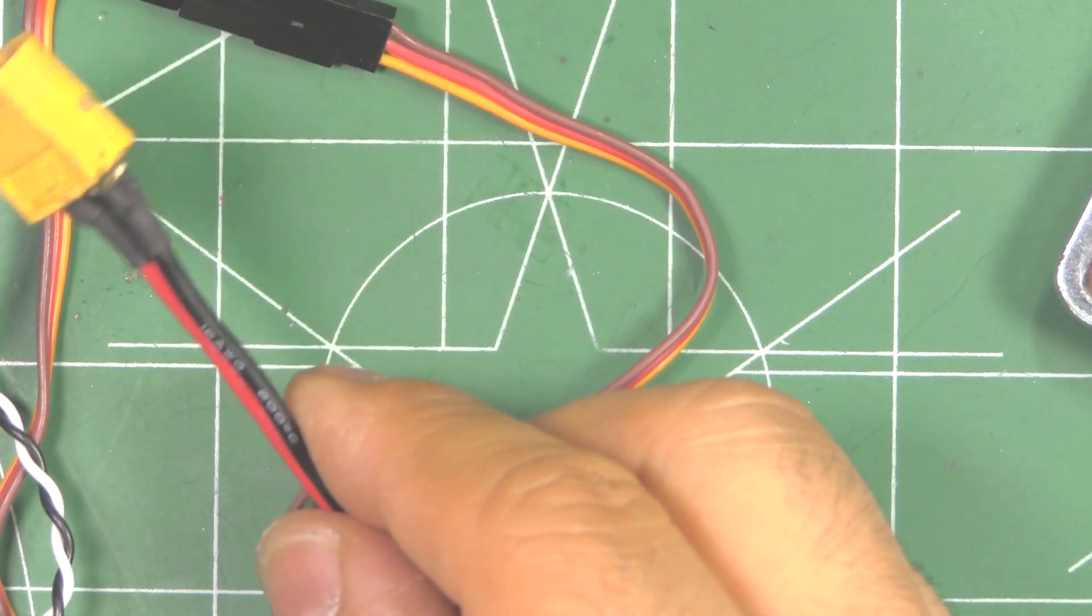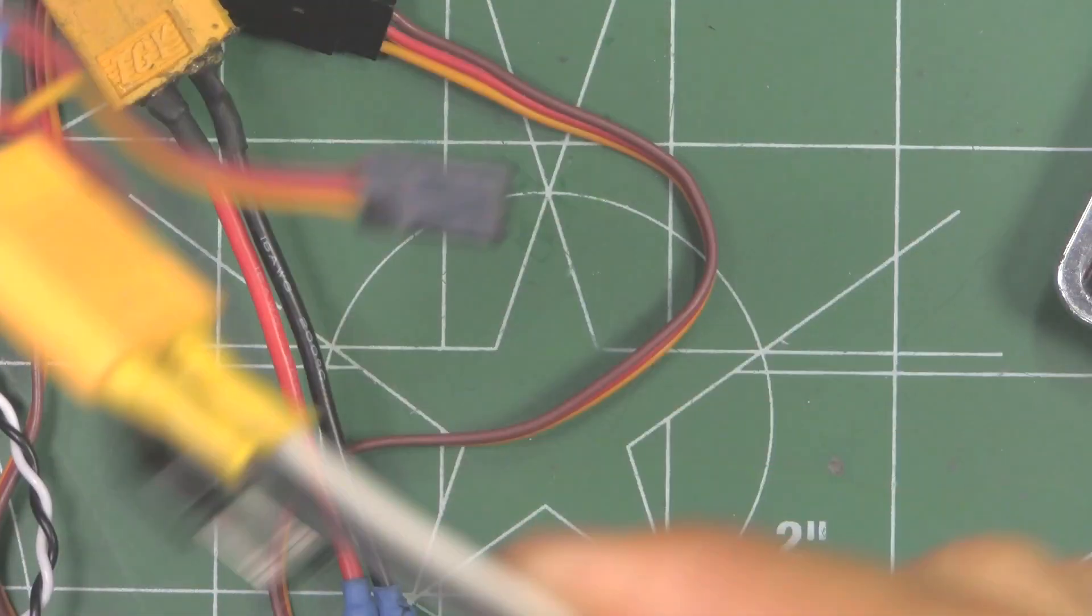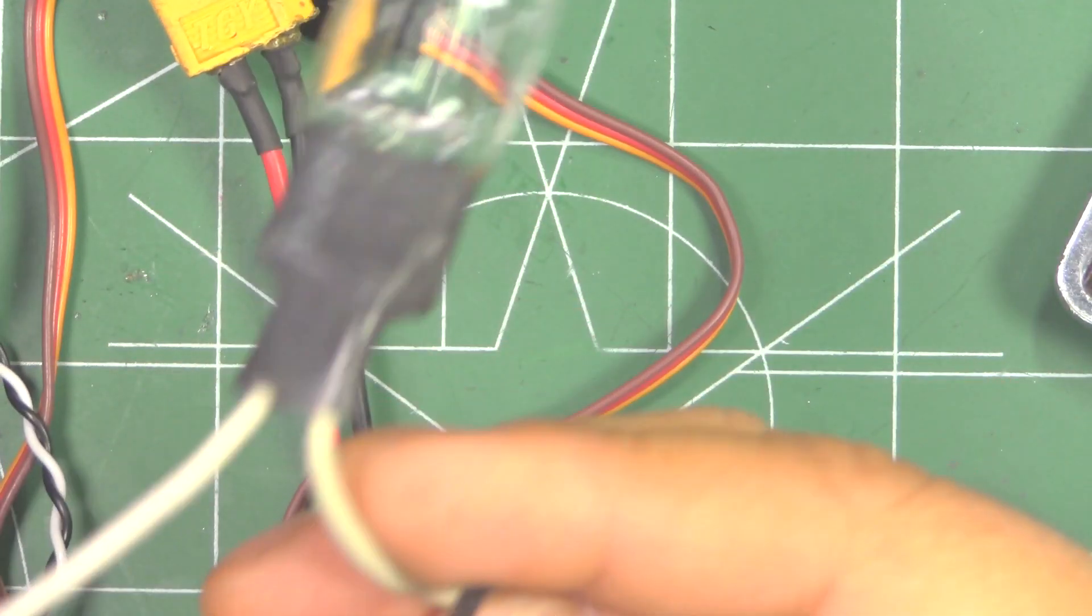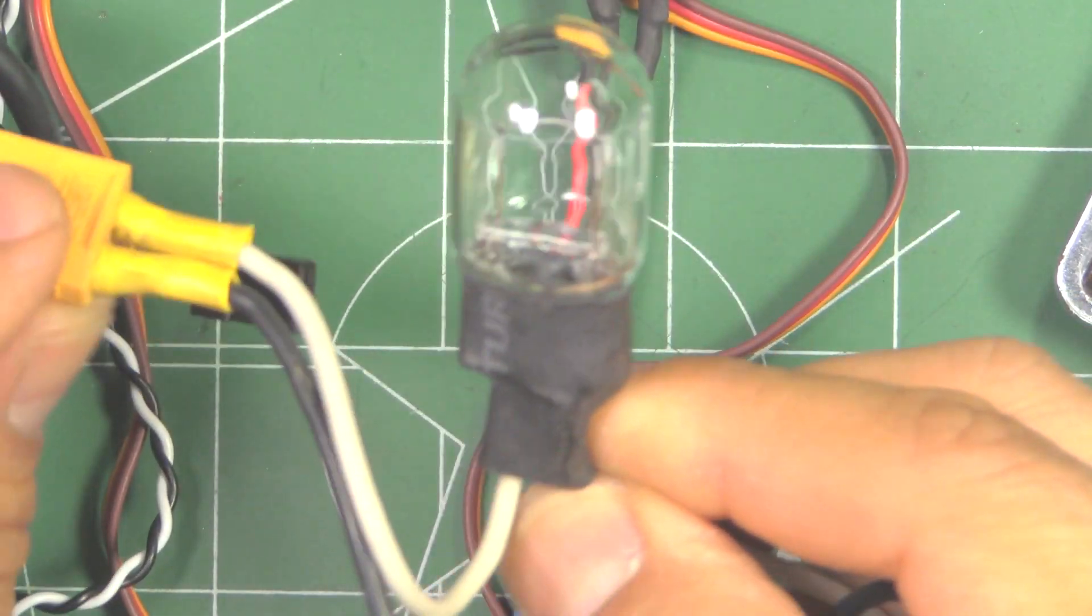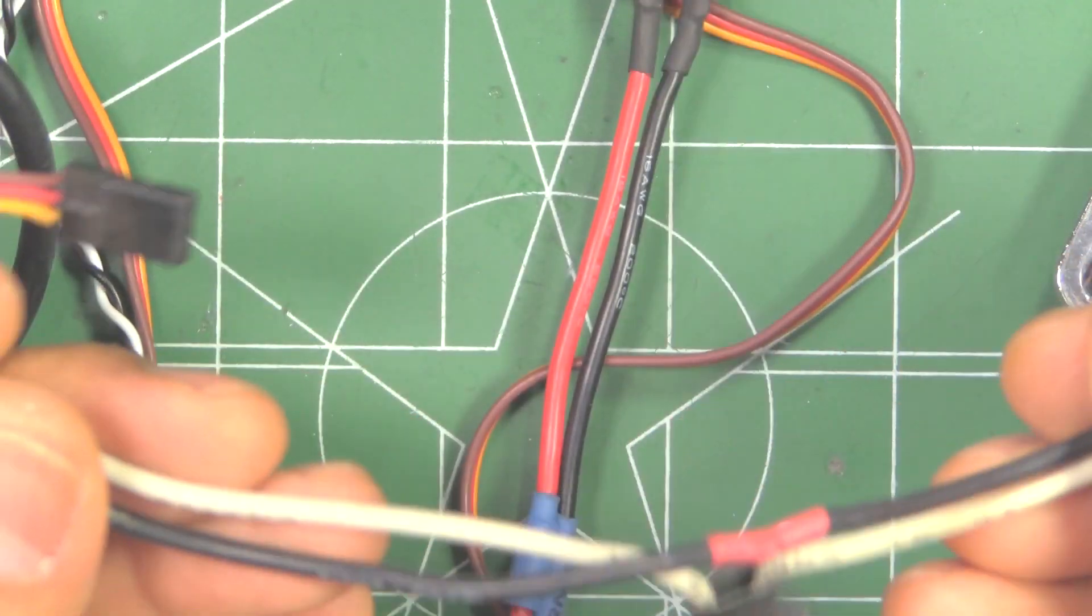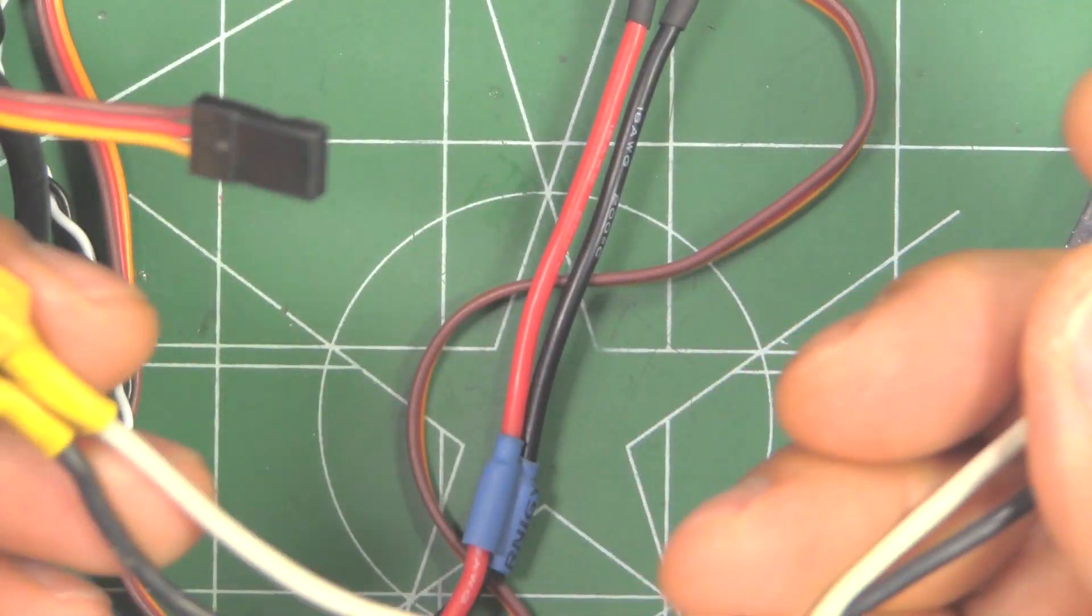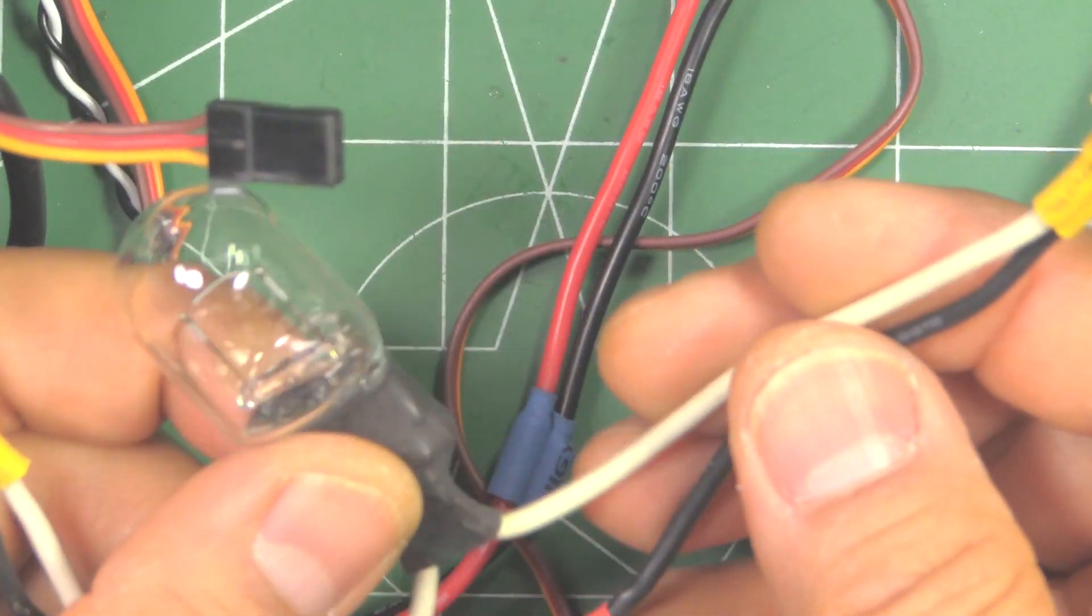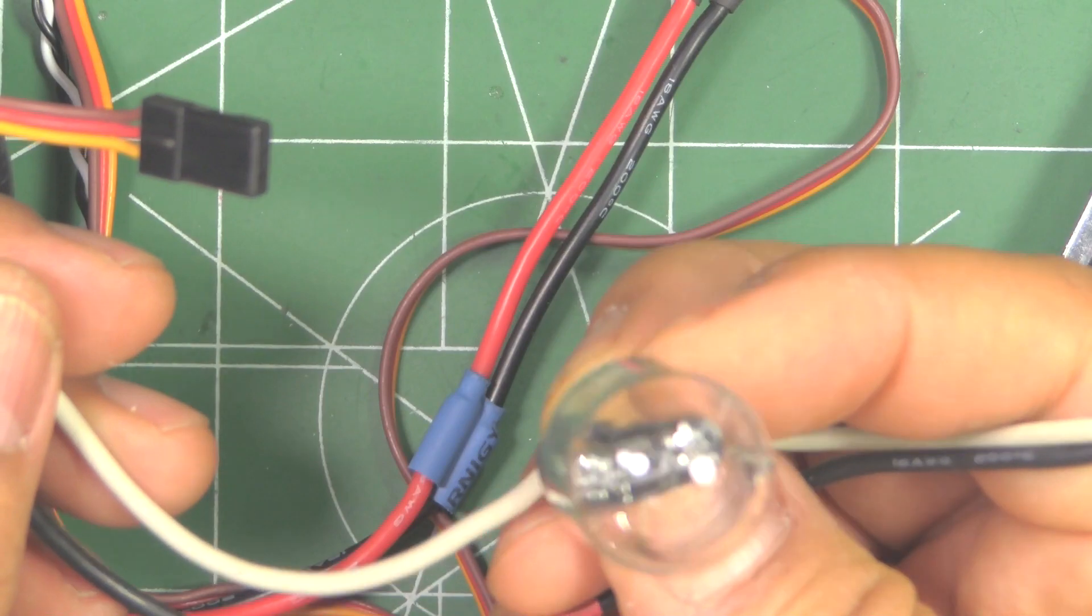Alright, let's hook it up to BLHeli 32 and let's see what it looks like. One thing also I want to mention is when testing or flashing, always good to have one of these guys. This is the smoke stopper. It's on RC groups, if you Google it, it'll show you how to make one. It's just basically a 12 volt automotive light bulb.